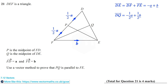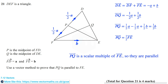In a similar way, PQ is equal to one half A minus a half A plus a half B, which equals a half B. Therefore PQ is equal to one half of vector FE. Therefore vector PQ is a scalar multiple of vector FE, and so they are parallel.